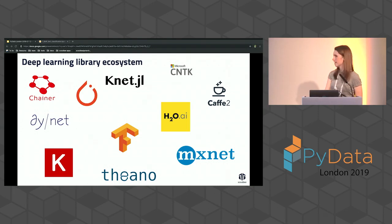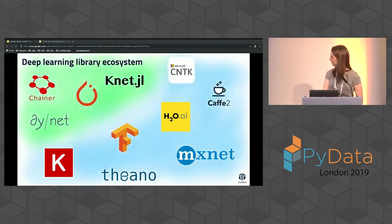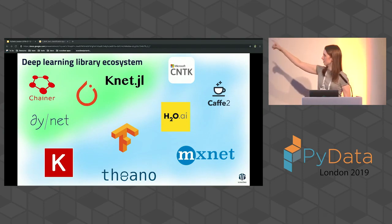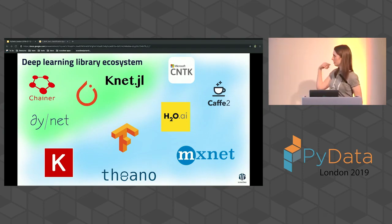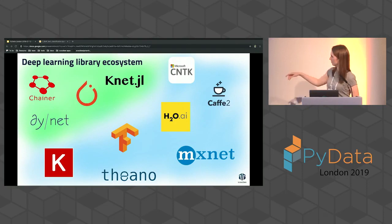A common factor that differentiates these libraries in terms of how their API is structured is whether they are static or dynamic deep learning libraries. The dynamic ones — marked in green — include PyTorch, Dynet, and Chainer. The more traditional ones like TensorFlow, Keras, and Theano use static computation graphs.